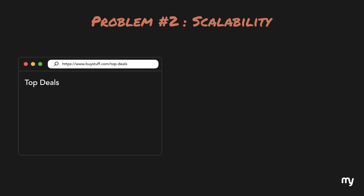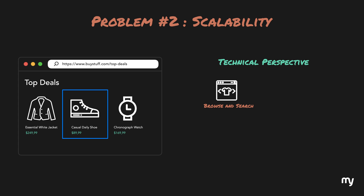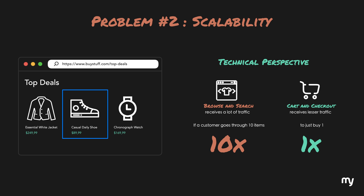Another problem is scalability. A lot of people browse and search for products on e-commerce websites — they go through a lot of items and then decide whether to buy something. Even if you intend to buy something, you go through a lot of items to find that one perfect article. From a technical perspective, the browse and search part of the application receives a lot more traffic compared to the checkout part. Even if a customer goes through an average of 10 products to buy one, we can say that browse and search receives 10 times more traffic than cart and checkout — and that's assuming everybody buys a product.